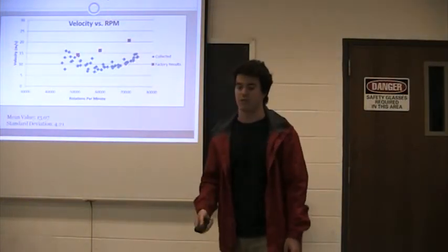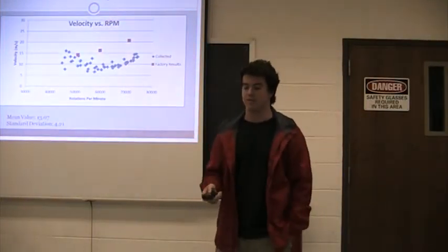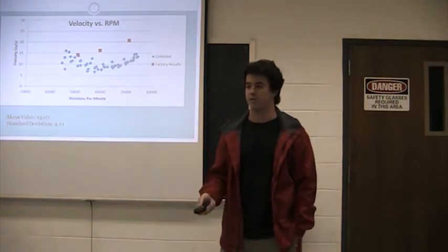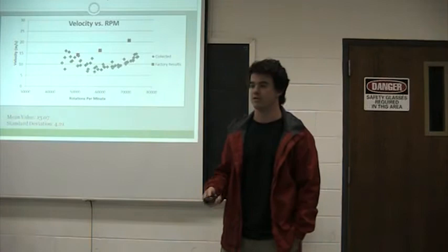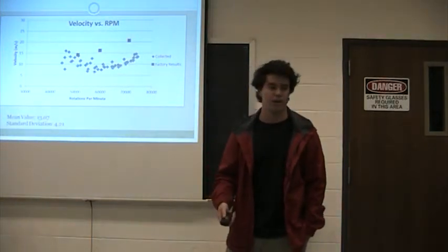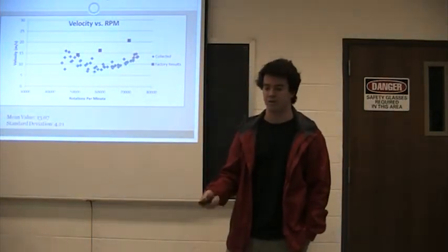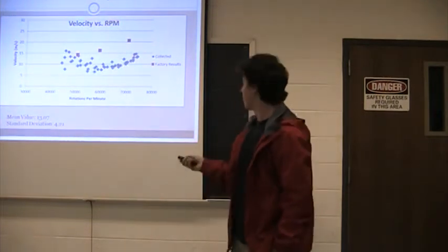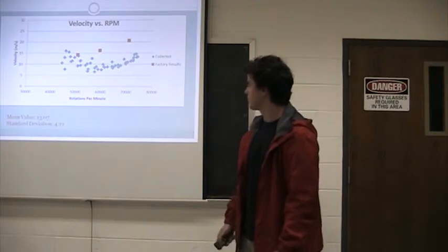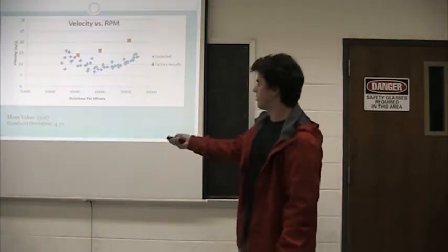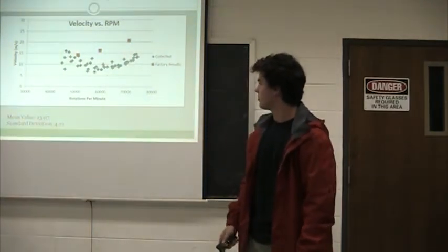Onto the velocity versus RPM. Between 40,000 and 50,000, you see a slight pickup. My understanding is that this is because the machine is just getting started. Pretty much imagine it warming up, and there's just a slight irregularity at the beginning. But as you can see, after 60,000, the slope is similar to our factory results. And so I thought you'd see my mean value standard deviations for all these calculations.